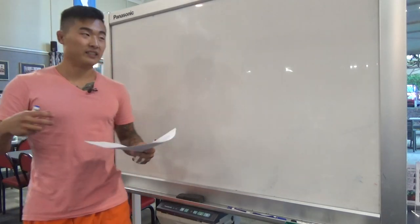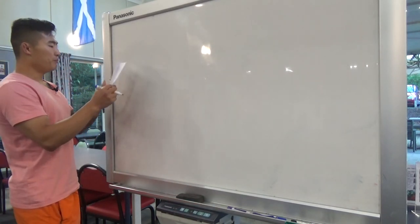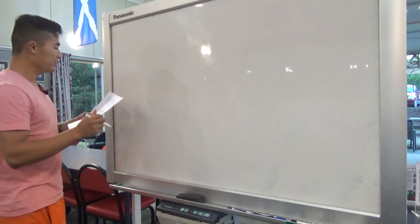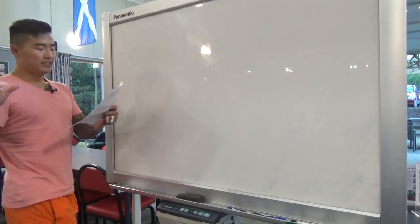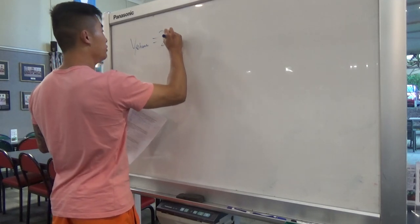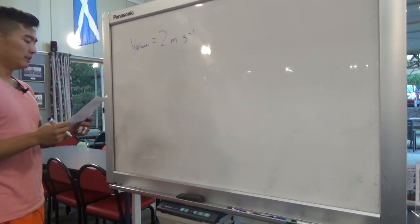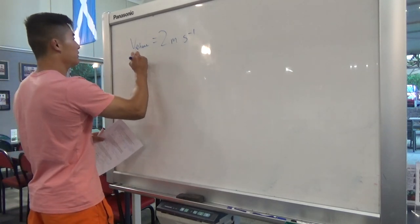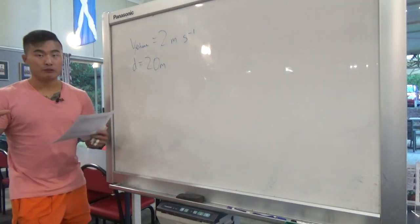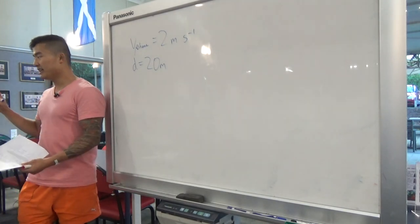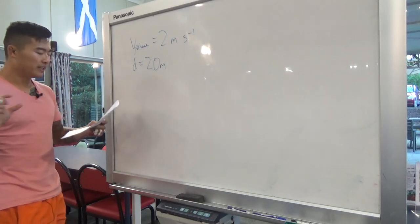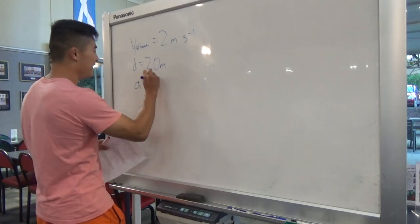We want to write down the variables we've been given. The velocity of the phone is 2 meters per second. The distance from you to the cliff edge is 20 meters. The variable we want to find — and this is really important, you have to identify the variable you're looking for — is acceleration, a equals question mark.